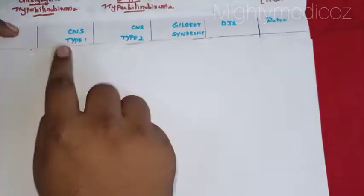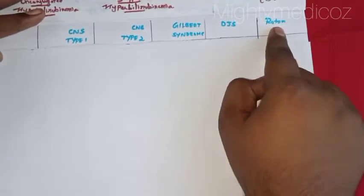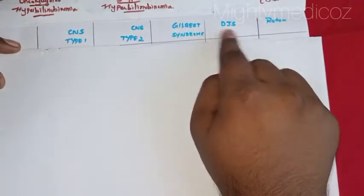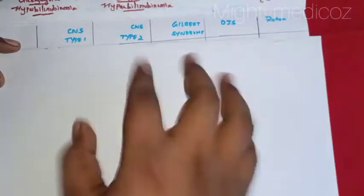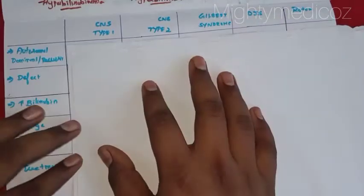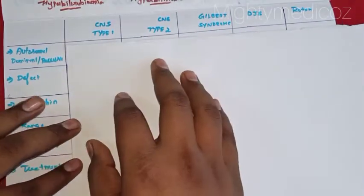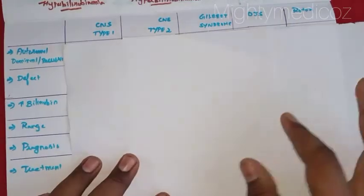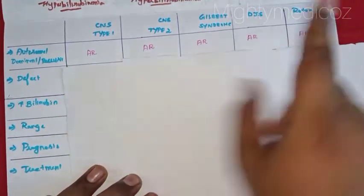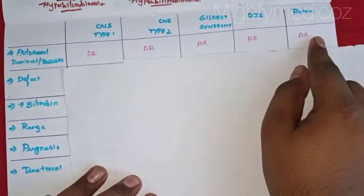There are 4 types of congenital jaundice: Crigler-Najjar syndrome type 1, Crigler-Najjar syndrome type 2, Gilbert syndrome, Dubin-Johnson syndrome, and Rotor syndrome. Irrespective of any type of congenital jaundice, all congenital jaundices are autosomal recessive type. So in your exam answer, you must first write that it is one of the autosomal recessive diseases.